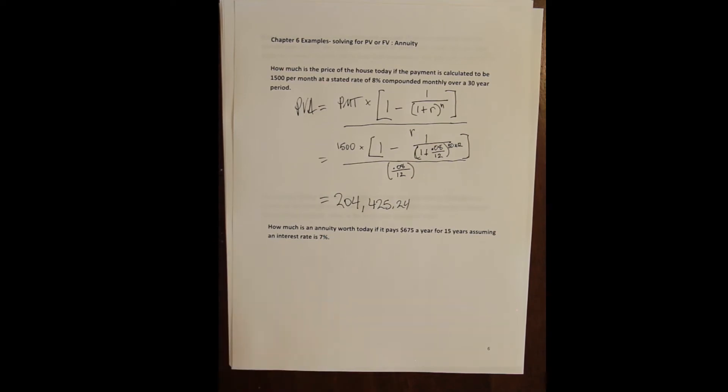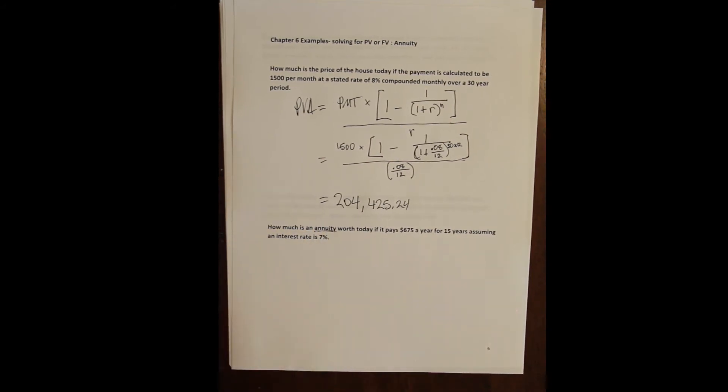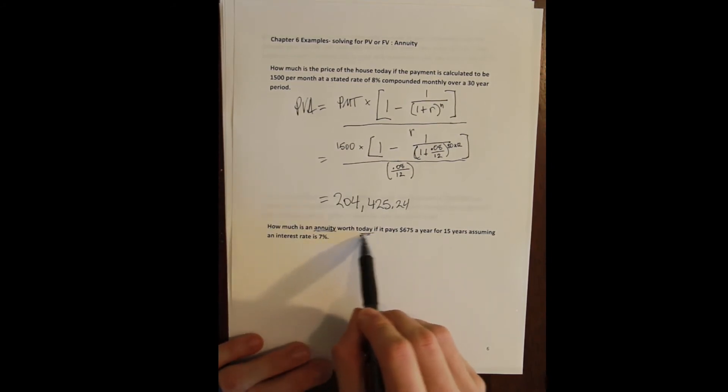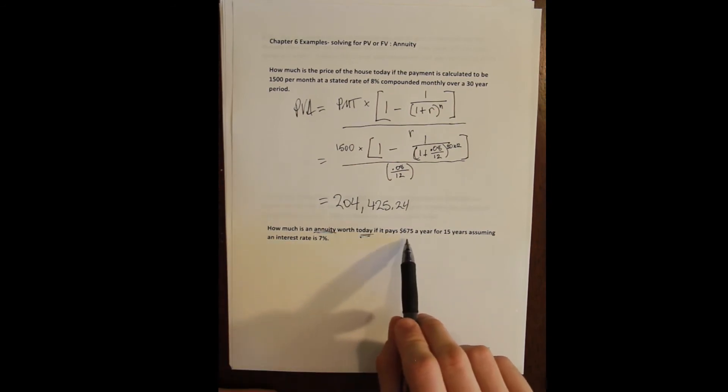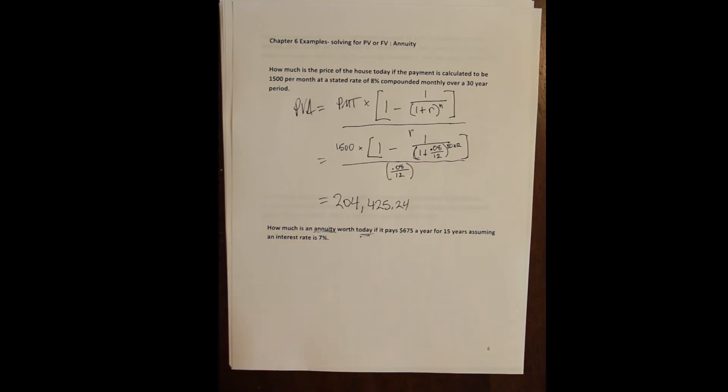So for instance, how much is an annuity worth? And remember, annuities are a description of a type of cash flow. Here I'm just saying some generic annuity, but anything can be an annuity, as long as it has level cash flows that don't go on forever. So, how much is some annuity worth today, present value, if it pays $675 a year for 15 years, assuming an interest rate of 7%?